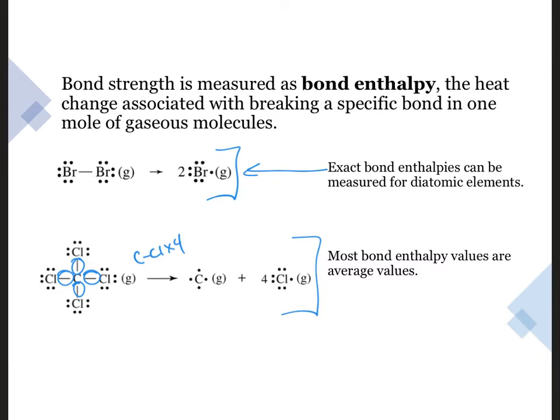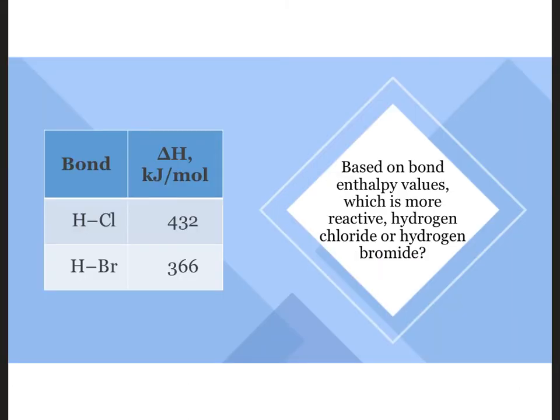I'm glad you asked. We can use bond enthalpy data to answer questions such as this. Which is more reactive, hydrogen chloride or hydrogen bromide? The bond enthalpy for the HCl bond is 432 kilojoules per mole, while HBr bond enthalpy is 366 kilojoules per mole.